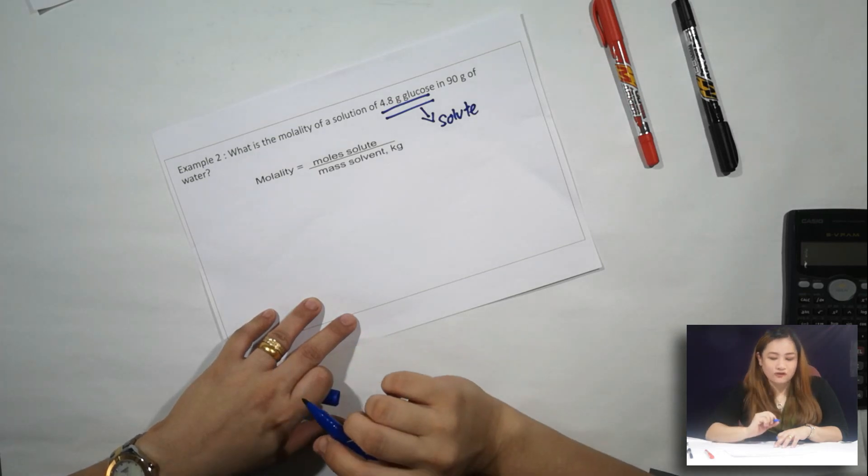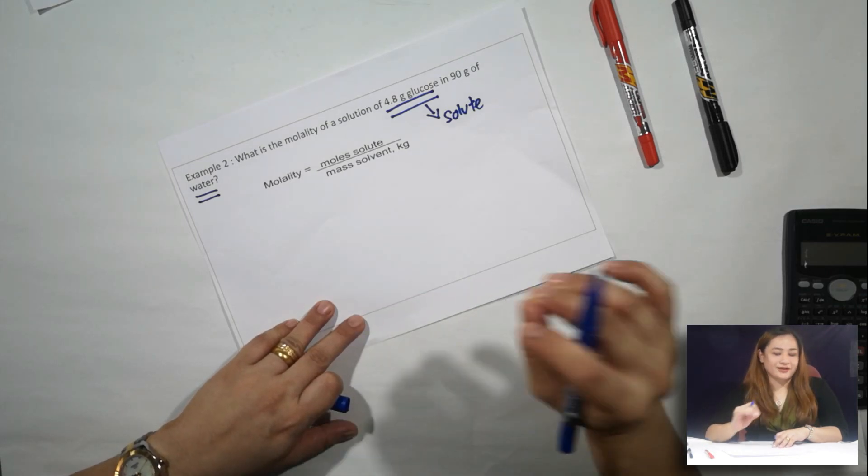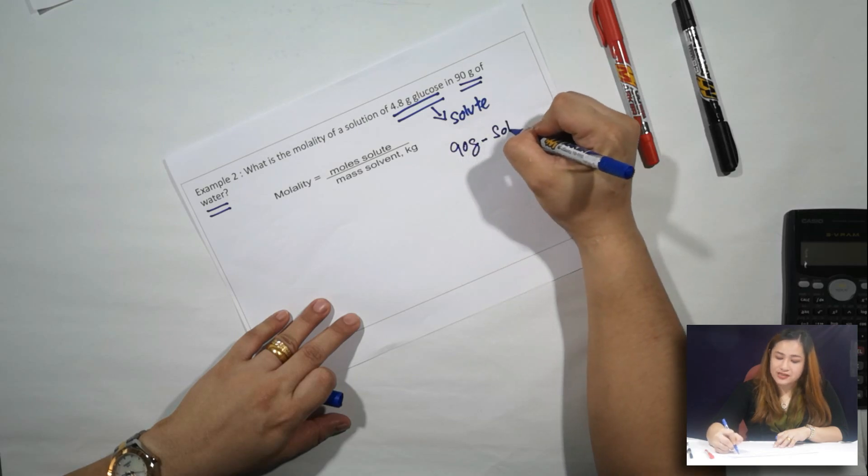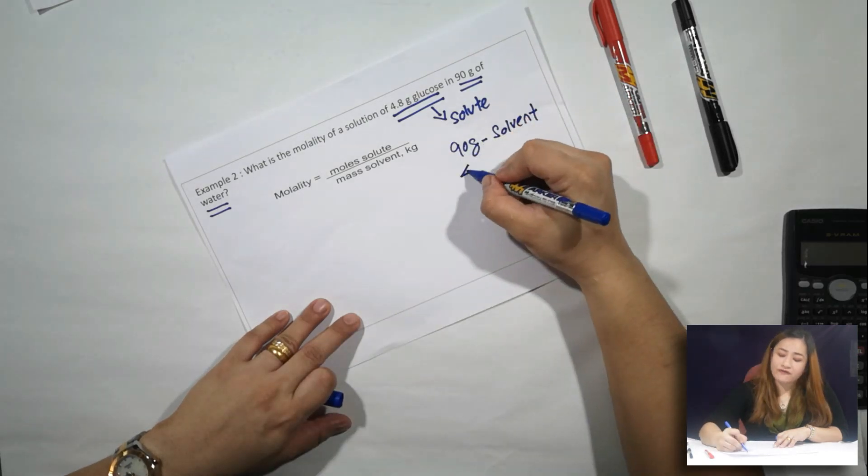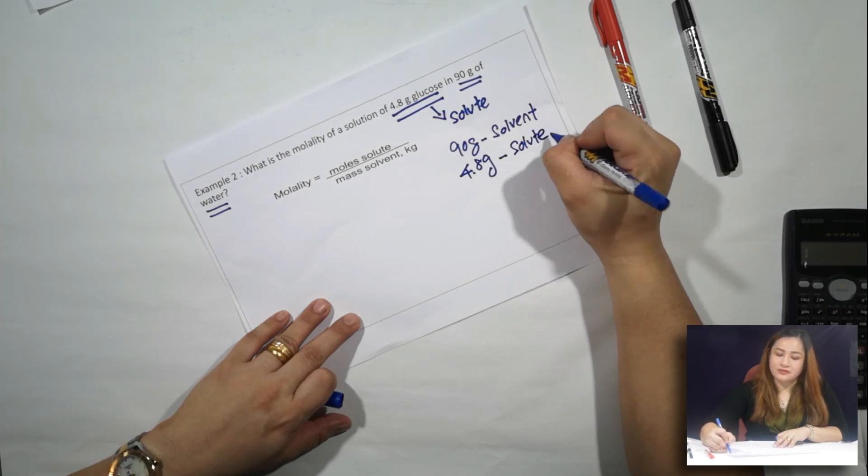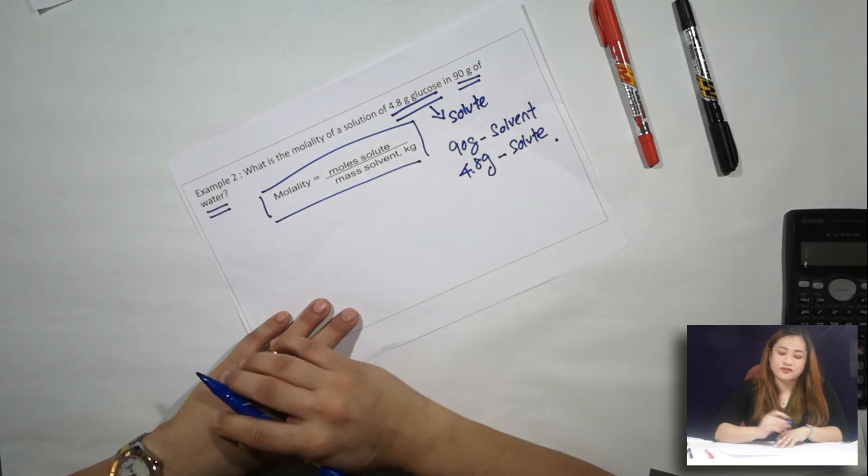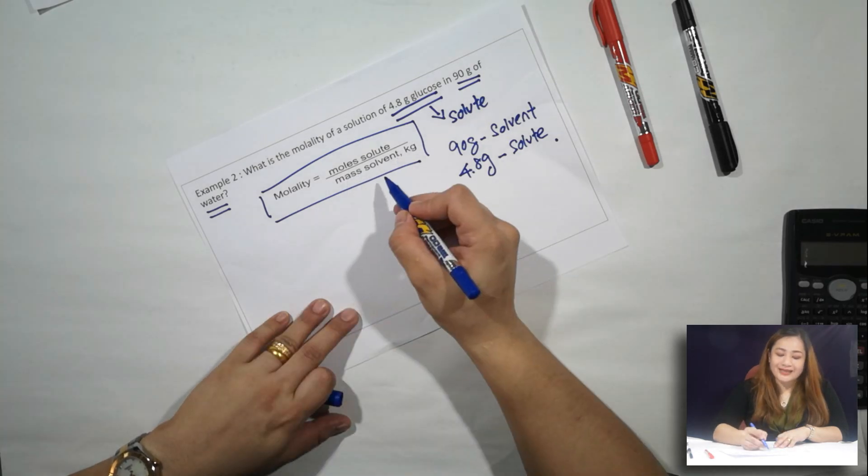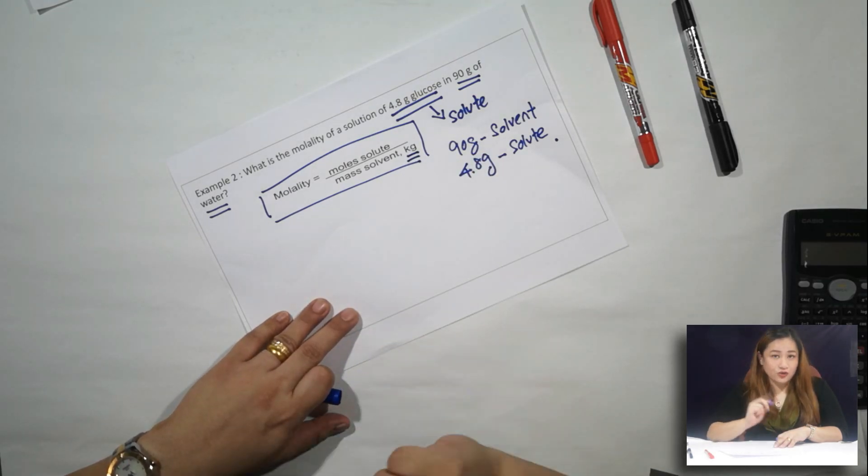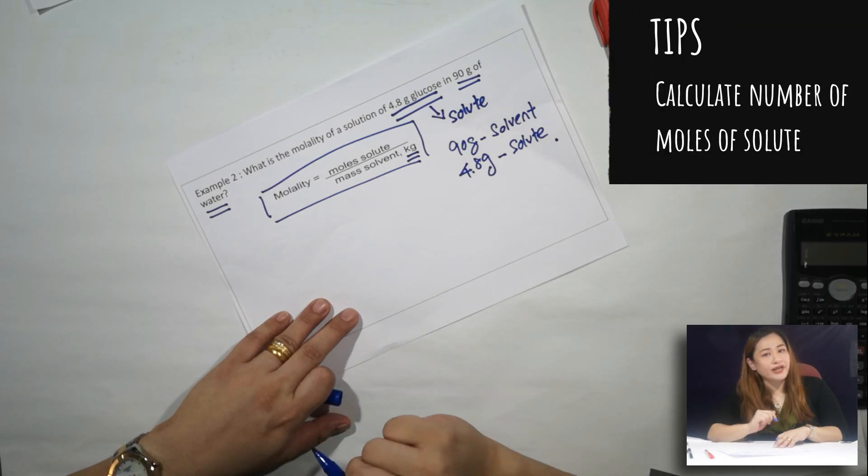And your solvent is the water which the glucose is dissolving in. So you have 90 grams of solvent and you have 4.8 grams of solute. Now, the formula is molality equals moles of solute over mass of your solvent in kilograms. So first you need to find the number of moles of solute, which is your 4.8 grams of glucose.